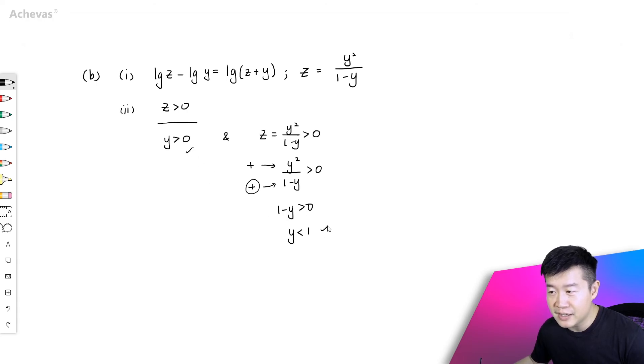So combine this and this together, this tells me that y must be bigger than 0 and y must be less than 1.